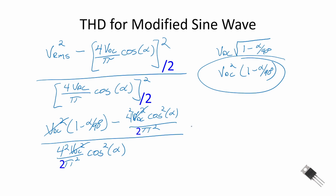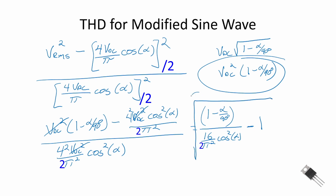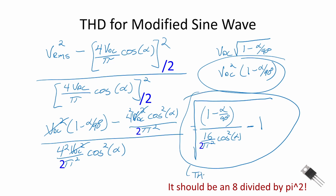After simplification, we obtain THD equals the square root of [1 minus alpha over 90 degrees, minus (16 over π squared) cosine squared alpha] all over (16 over π squared) cosine squared alpha. That is the THD equation for a modified sine wave — you'll want to write that one down. If you calculate with alpha equal to 0 degrees, the total harmonic distortion for a square wave is about 46%.